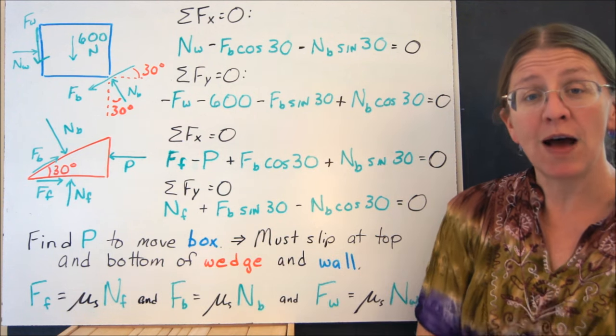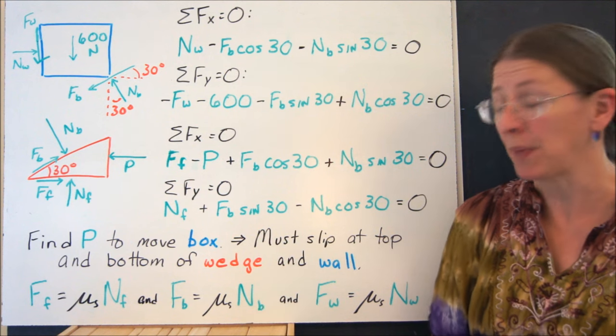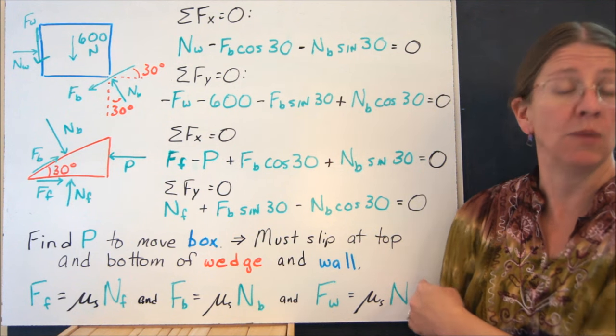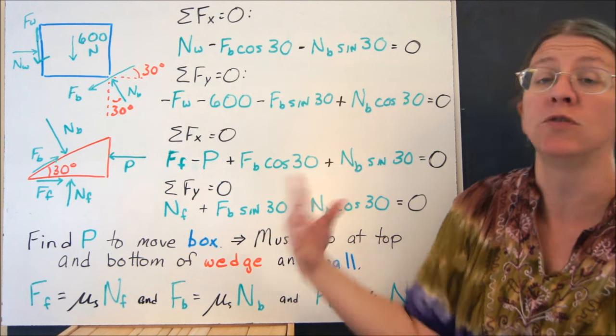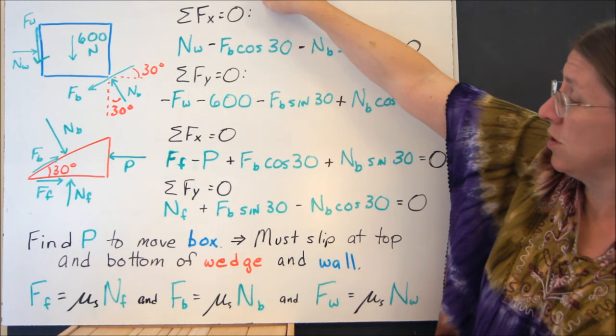Just bearing in mind what angle those forces act at. And if I want to find P to move that box, it has to slip at all three of these locations. It wouldn't make any sense otherwise. You can't move just the wedge because the block is in the way.